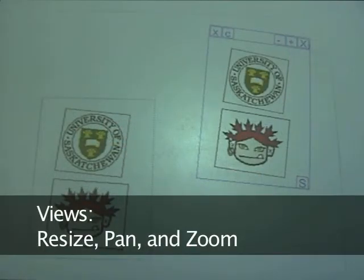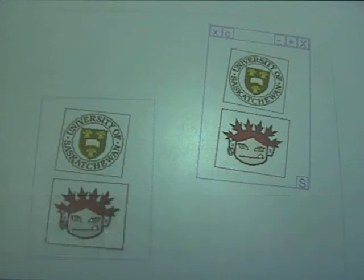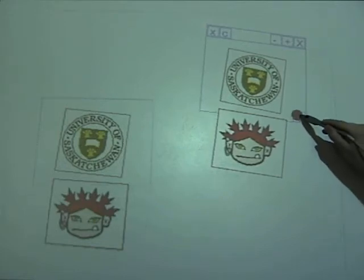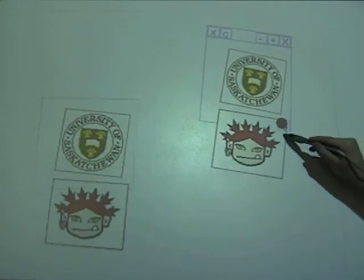Users can make changes to the area that is displayed in the view, even if they don't have easy physical access to the original reference area. The reference area size can be changed by dragging the resize button. As the size changes, new items are added and removed from the view.